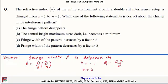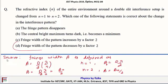When n changes to 2, β becomes Dλ/(2d), which equals β₀/2. So when n = 2, the fringe width becomes β₀/2, meaning the fringe width of the pattern decreases by a factor of 2. Therefore, option D is the correct answer for this problem.